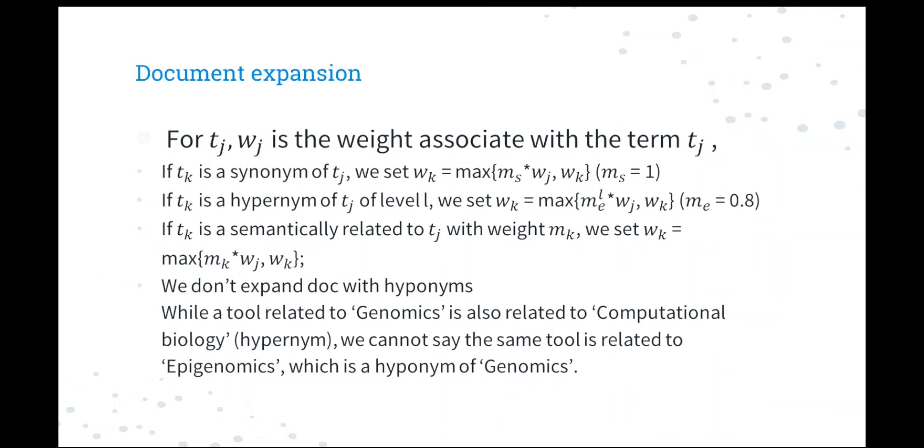In the previous part, we get the sequence of key terms associated with their weight. And now we want to expand the sequence with synonyms, hypernyms, and semantically similar terms. The score is assigned as the following schema. For term j, wj is its weight. And its synonyms will get at least the same score as tj. Similarly, we can get the weight for hypernyms and the semantically similar terms. One thing I want to emphasize is that we do not expand documents with hyponyms. While a tool related to genomics is also related to computational biology, which is its hypernym, we cannot say that the same tool is related to epigenomics, which is a hyponym of genomics.